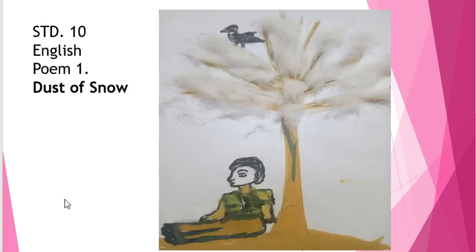Before we begin line to line explanation, let us try to understand the major symbols which are used in the poem. Here we can see that the poet is sitting under a tree and the name of the tree is Hemlock tree. Hemlock tree is associated with poison because it is a poisonous tree. Another symbol is the crow — the bird — which, as we all know, is associated with bad omen.